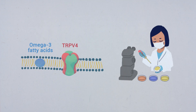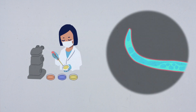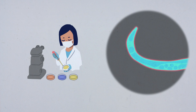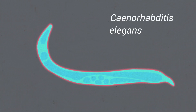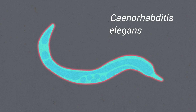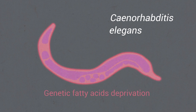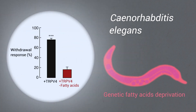Here, we studied the contribution of omega-3 fatty acids to TRPV4 function by precisely manipulating their content in Caenorhabditis elegans, an animal model that allows for precise manipulation of the membrane environment. By genetically depriving the worms of fatty acids, we determined that the metabolism of omega-3 fatty acids is required for TRPV4 activity.